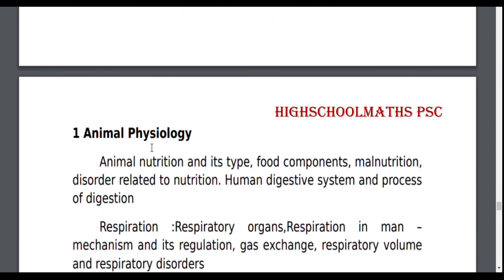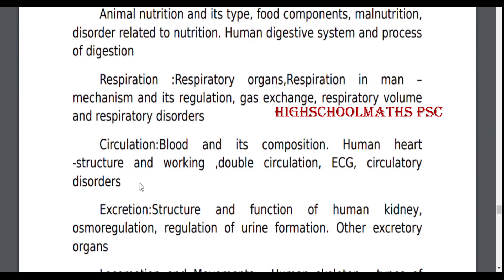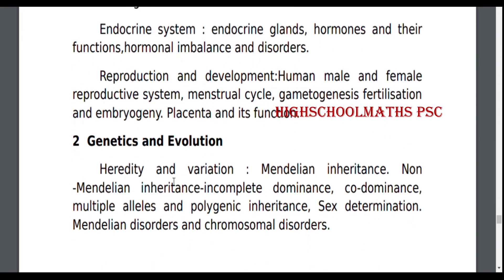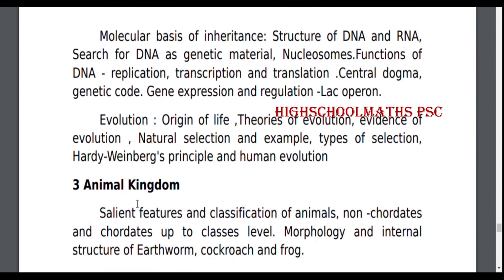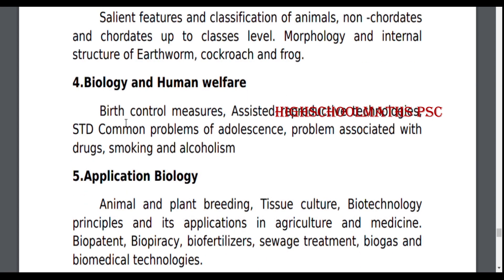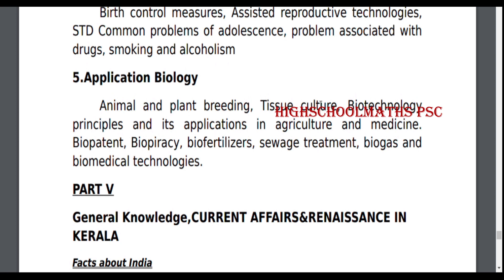Zoology and Animal Physiology: Animal Nutrition — Food Components, Malnutrition, Disorders related to Nutrition. Respiration, Circulation, Excretion, Locomotion and Movements, Nervous Coordination, Endocrine System, Reproduction and Development. Genetics and Evolution: Heredity and Variation, Evolution. Animal Kingdom: Salient Features and Classification of Animals — Non-Chordates and Chordates up to Class Level, Morphology and Internal Structure of Earthworm, Cockroach and Frog. Biology and Human Welfare: Birth Control Measures, Assisted Reproductive Technologies, Common Problems of Adolescence, Problems associated with Drugs, Smoking and Alcoholism. Application of Biology: Animal and Plant Breeding, Tissue Culture. Biotechnology Principles and its Applications in Agriculture and Medicine, Biopatent, Biopiracy, Bio-Fertilizer, Gene Therapy, Biogas and Biomedical Technologies.